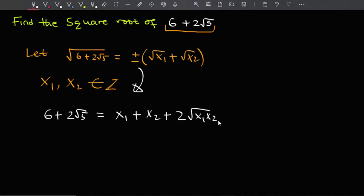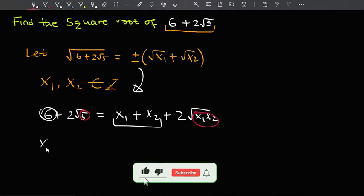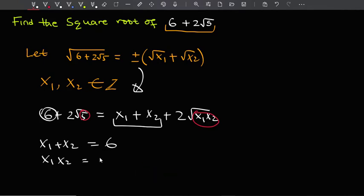And you can see that from here we can relate the terms that are similar. For instance, this and this, and then we also have this and this right here. So let's go ahead and do that. So we have x1 plus x2 equals 6, and then we have x1 x2 equals 5. So let's solve these two equations simultaneously.